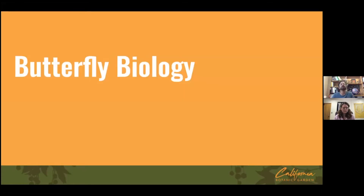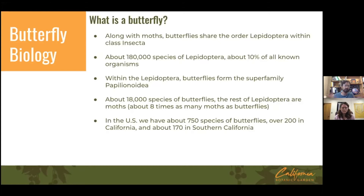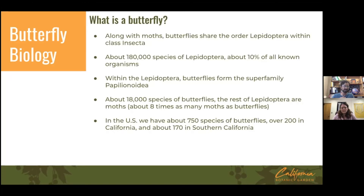So what exactly is a butterfly? Along with moths, butterflies share the order Lepidoptera in the class Insecta. Butterflies and moths combined are about 180,000 species — that's 10% of all known organisms, so one in ten living things is a butterfly or moth. Butterflies form their own superfamily at about 18,000 species, while the remaining roughly 160,000 species of Lepidoptera are moths — eight times as many moth types as butterflies. In the U.S. we have about 750 species, about 200 in California, and around 170 in Southern California.